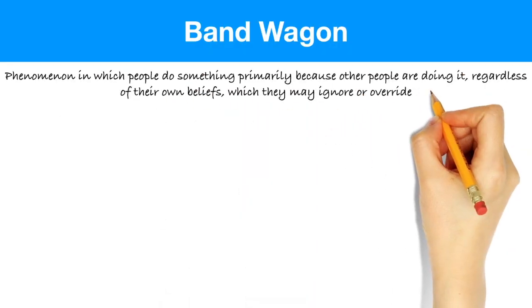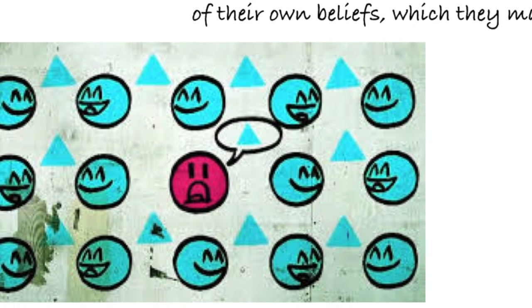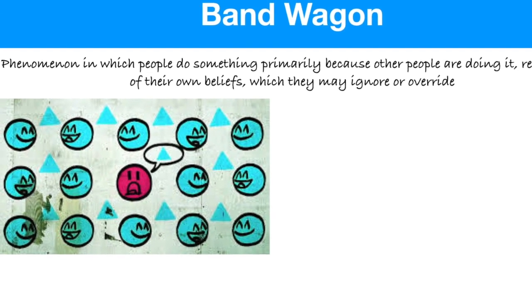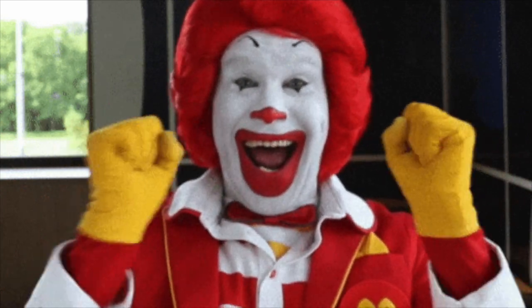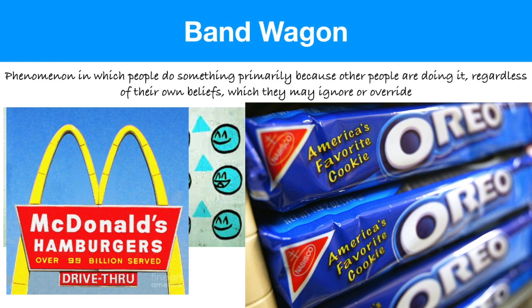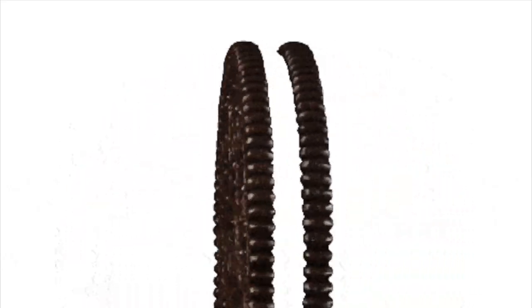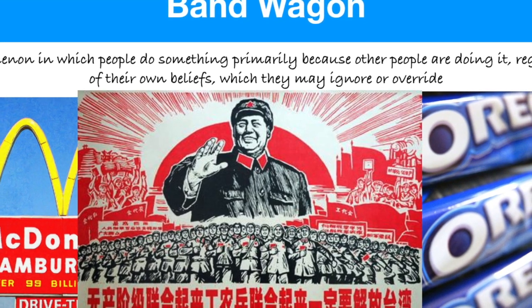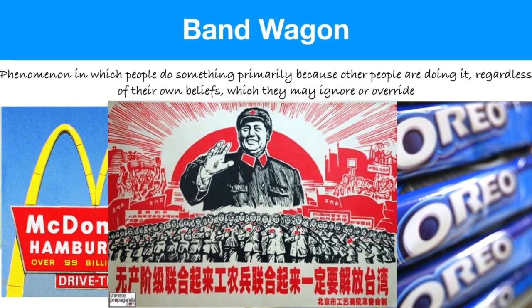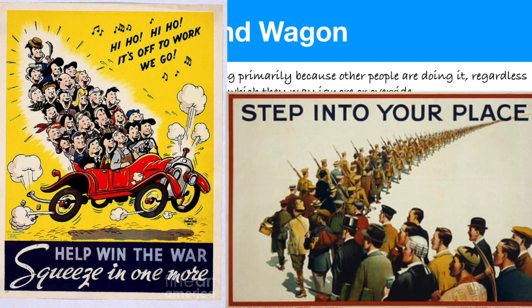The next technique is called bandwagon — a phenomenon in which people do something only because other people are doing it, even if it goes against what they believe in. It's sort of the idea of human beings conforming to those around us. We can see this in a commercial form like McDonald's: 99 billion hamburgers served. The same goes for an Oreo slogan: America's favorite cookie — it makes you feel like everybody enjoys this cookie so you should get some too. Governments also use bandwagon propaganda, like Chairman Mao promoting the idea that everybody believes in him, which ended up costing around 30 million lives. Our own government has used this technique to promote the idea that we all need to help out — everybody's part of the war effort.